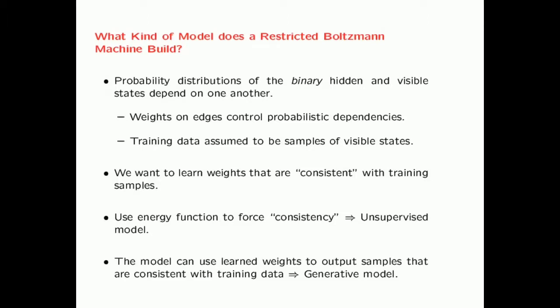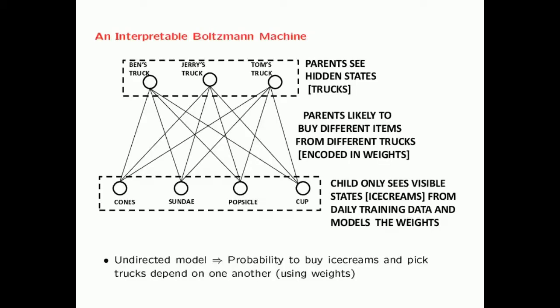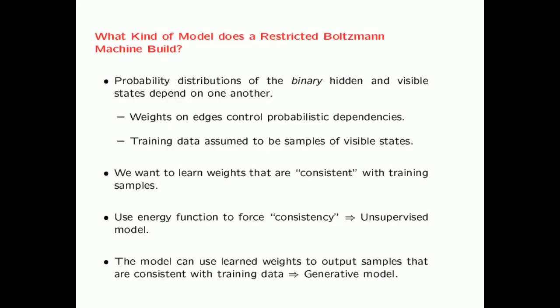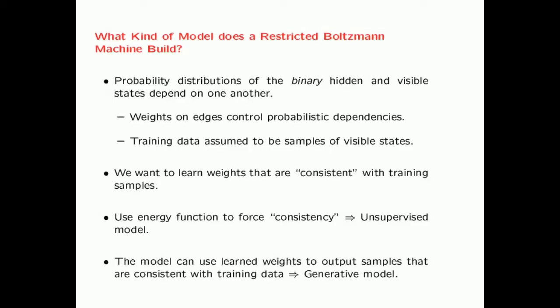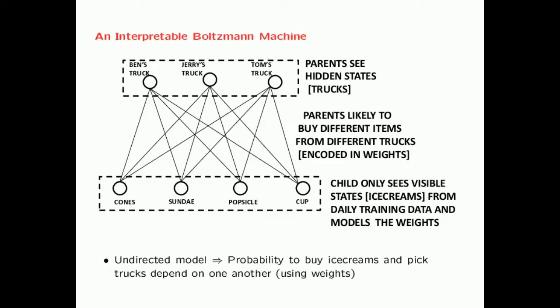A restricted Boltzmann machine builds probability distributions over binary states—both hidden and visible. In the ice cream example, all states are binary: either a truck is picked or not picked, either an ice cream is picked or not. The weights on the edges control probabilistic dependencies: large positive values of W_IJ imply the states will be on together, while negative weights imply the binary values are more likely to be different. The training data are assumed to be samples of visible states—in this application, only the cone, sundae, popsicle, and cup.